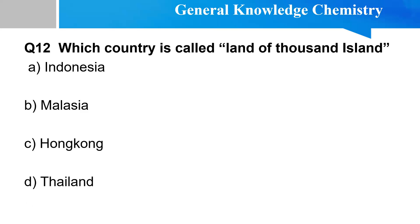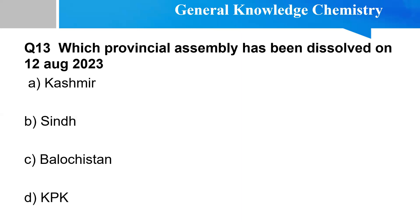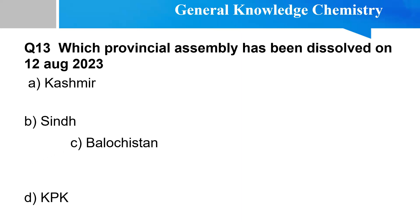Question twelve: Which country is called the land of Thousand Islands? Next question: Which provincial assembly was dissolved on 12th August 2023? Options: Kashmir, Sindh, Balochistan, KPK. This is a current affairs most repeated question. The answer is Balochistan — the provincial assembly was dissolved in August.